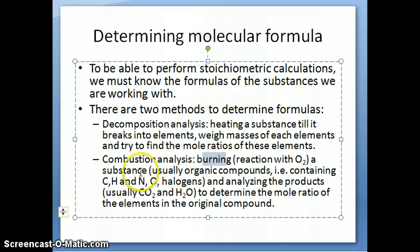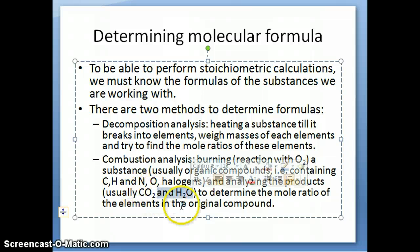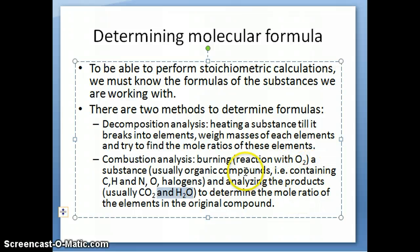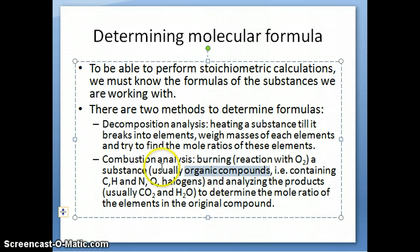When you burn something, you're reacting with oxygen, and the substance produces certain types of products. The products we're going to use to analyze formulas are carbon dioxide (CO2) and water (H2O). We use the masses of these products to work back and determine the actual mole ratio of the elements in the original compound. When we talk about combustion analysis, we're usually dealing with organic compounds — compounds that contain carbon and hydrogen primarily, along with smaller amounts of nitrogen, oxygen, or halogens (group seven elements in the periodic table).